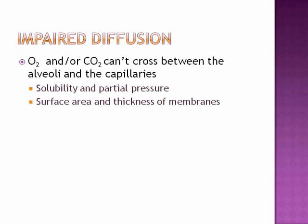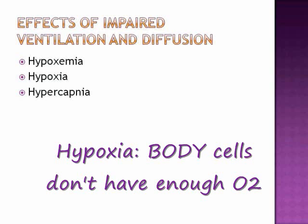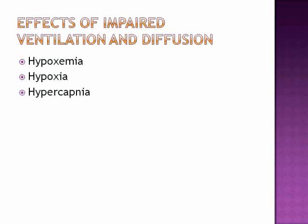Part of all of this is that if the alveoli are filled with fluid, the gases can't be diffusing back and forth. The effects of both impaired ventilation and diffusion include hypoxemia, which is too little oxygen in the arterial blood; hypoxia, which has to do with the cells — the cells are deprived of oxygen; and hypercapnia, which means there's too much carbon dioxide in the blood.